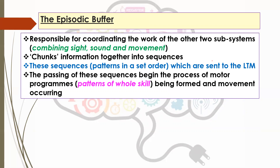The passing of these sequences begins the process of what they call motor programs being formed and movements occurring. Motor programs are patterns of the whole skill — an organised set of experiences stored in your long-term memory. The episodic buffer's organisation and the sequences sent in the current moment initiate the process whereby an action is decided on, and then movement can take place from there — so it has an absolutely crucial role.